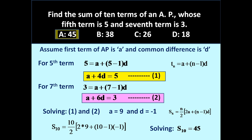So the answer is 45. In this manner, we can use the formulas to determine the nth term as well as to find the sum of the series up to n terms. Thank you very much for watching this video. If you like it, please subscribe to my channel. Thank you very much.